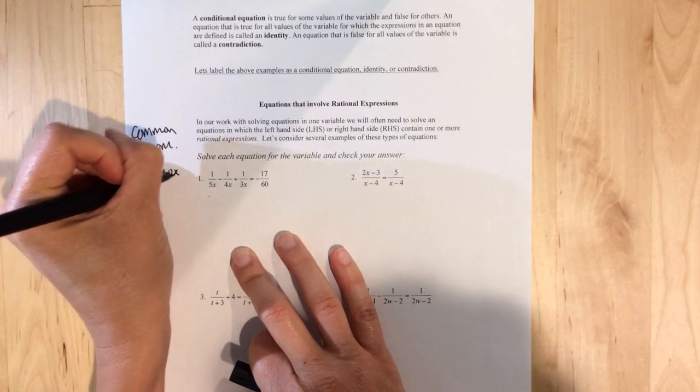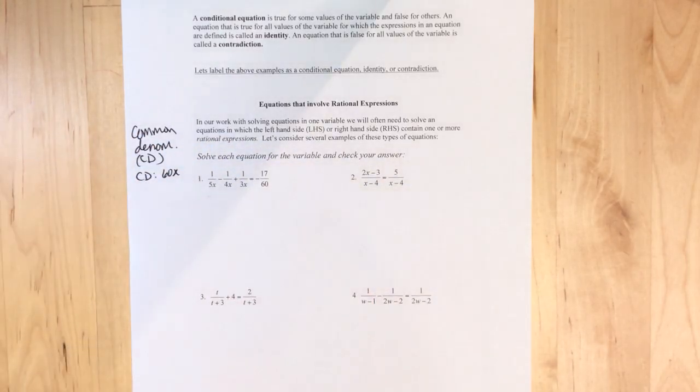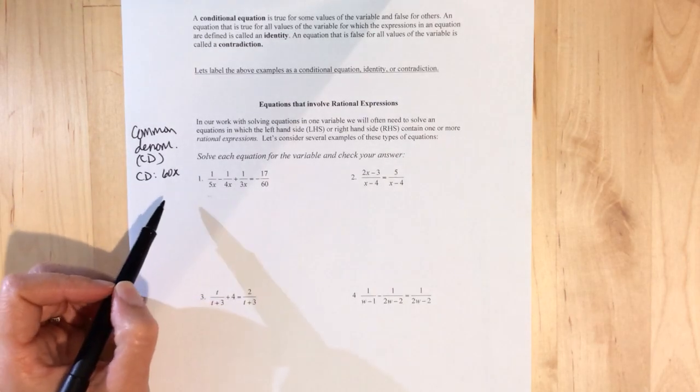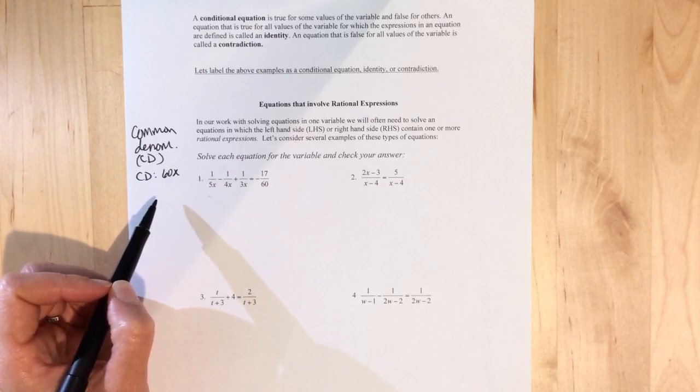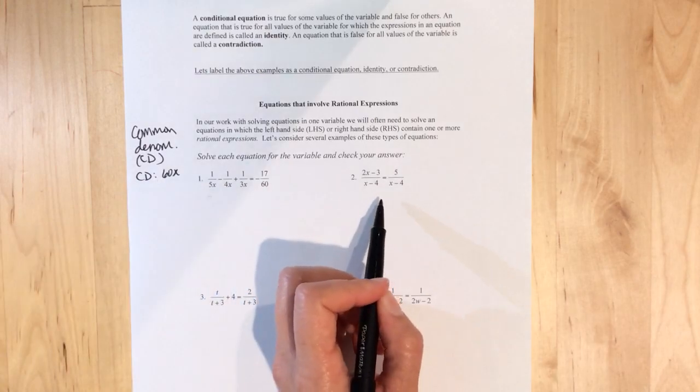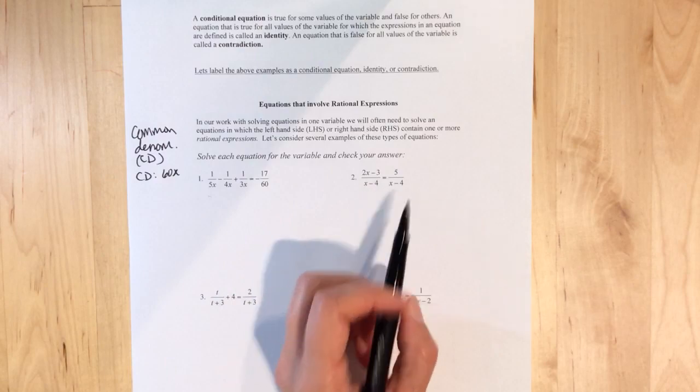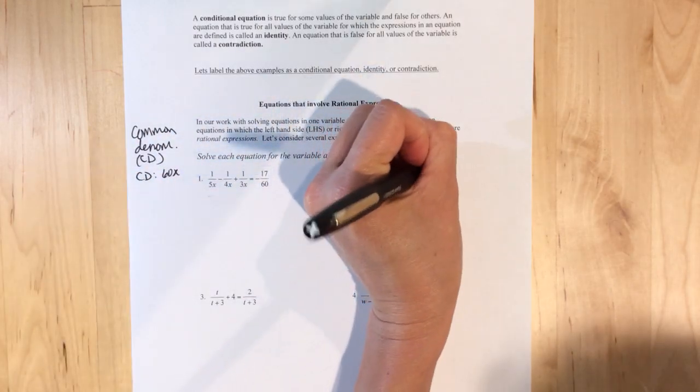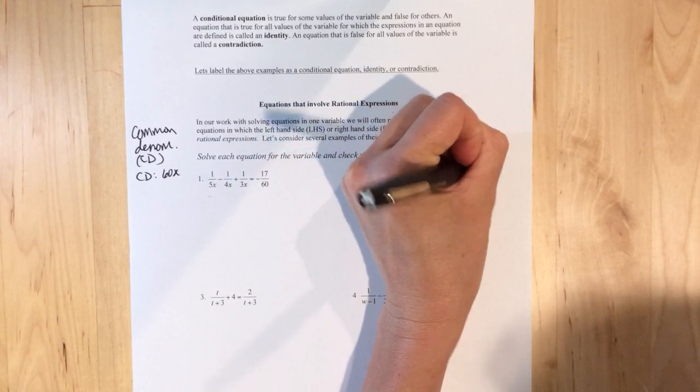That would be 60X, right? So one thing that I like to do for all of the, well, actually here, let's go through it. I lied. So the common denominator for one is 60X. The common denominator for two is negative, or excuse me, is X minus four, right? That one's already kind of there for us.